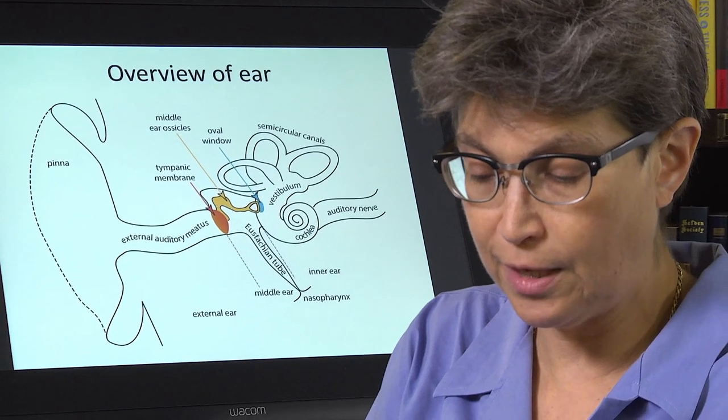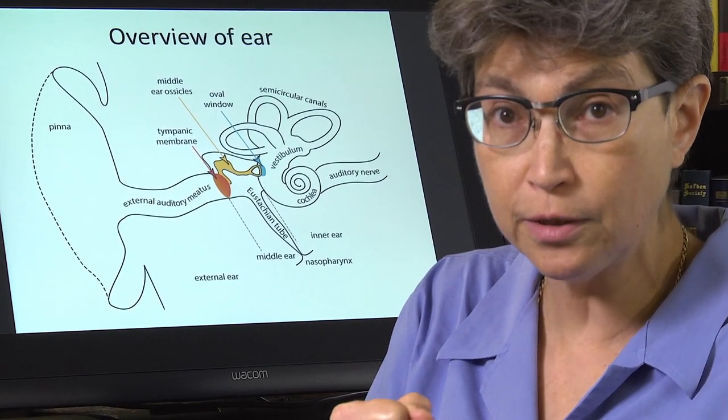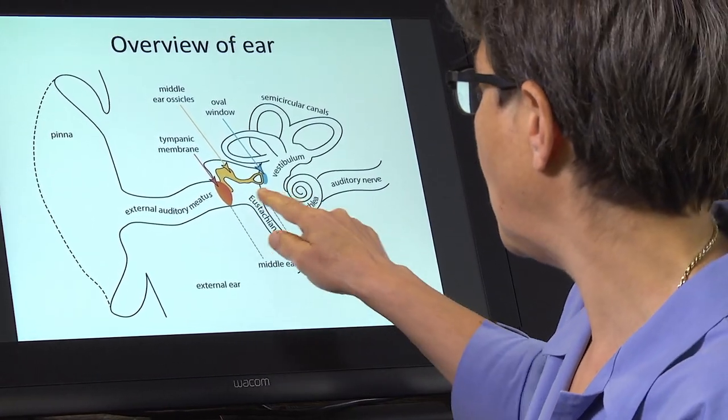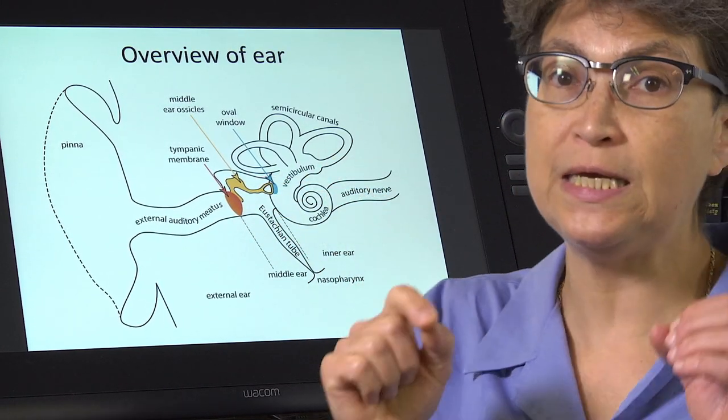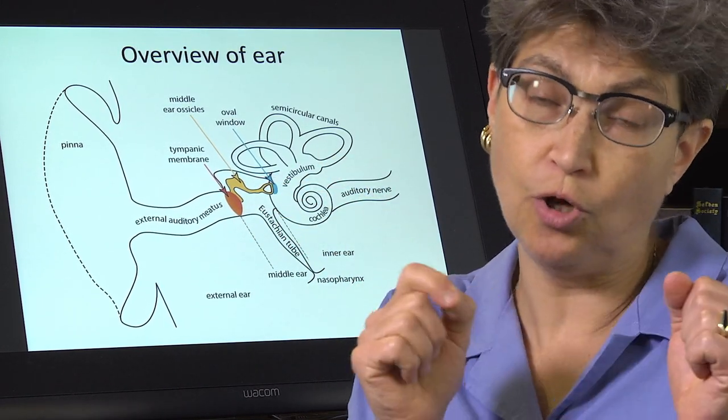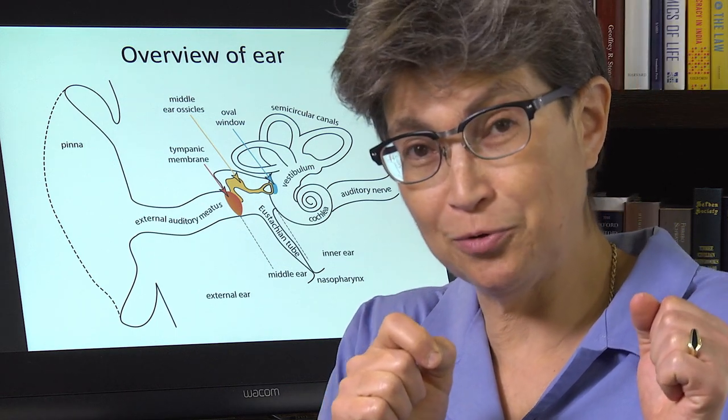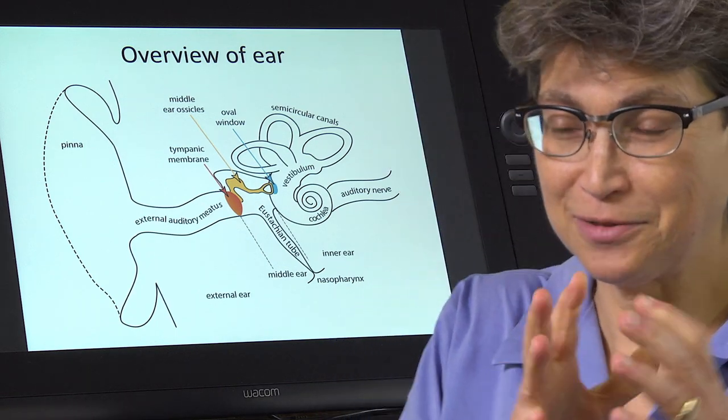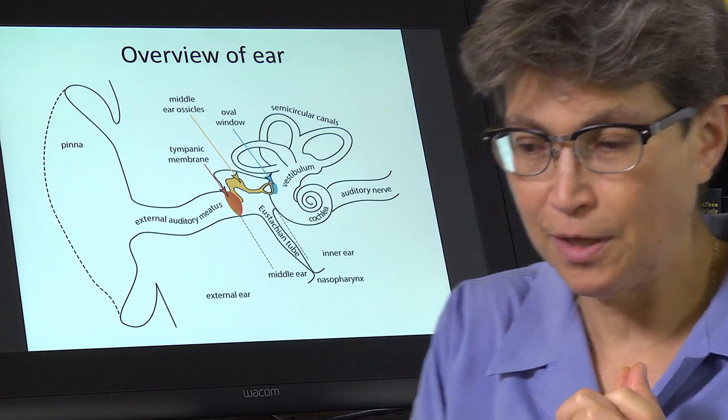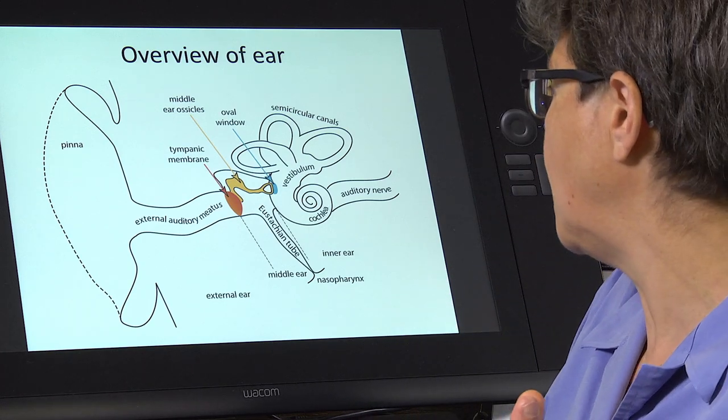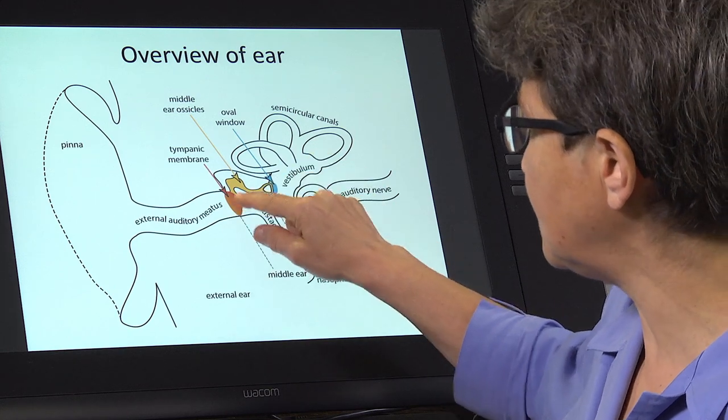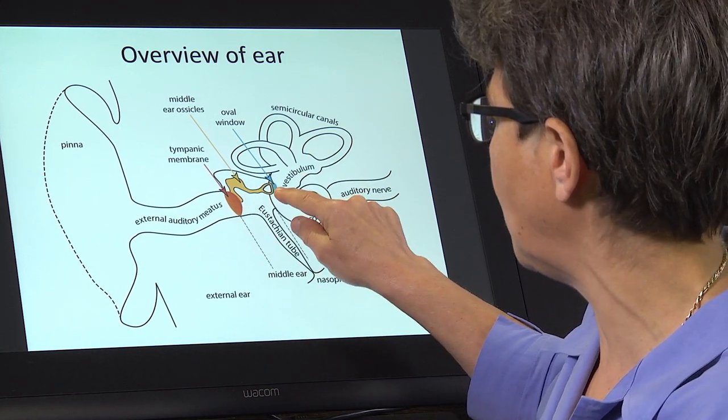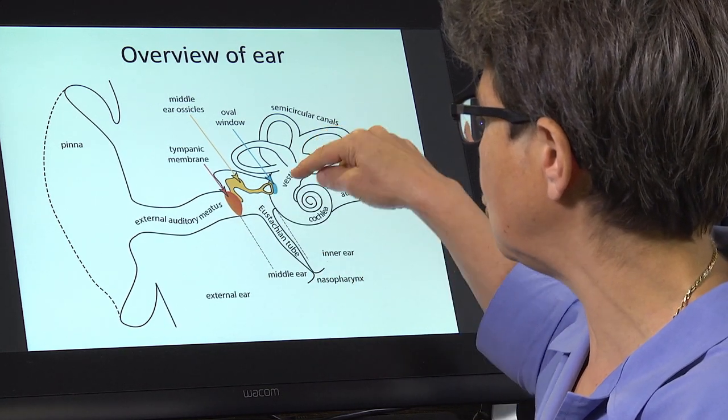The oval window is a membrane that is part of the cochlea, and so what is in the middle ear are a series of three tiny little bones. They're called baby bones, and baby bones is ossicles. So a baby bone is an ossicle. And there are three ossicles that are going to take this information from the tympanic membrane and deliver it to the cochlea.